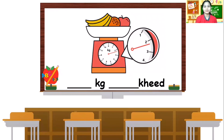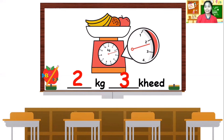Okay, last one. What is the mass of the fruits? Look at the arrow. Where does the arrow point in? Very good! That would be two kilogram and how many hg? Three hg! Great job, everyone! You're doing great!